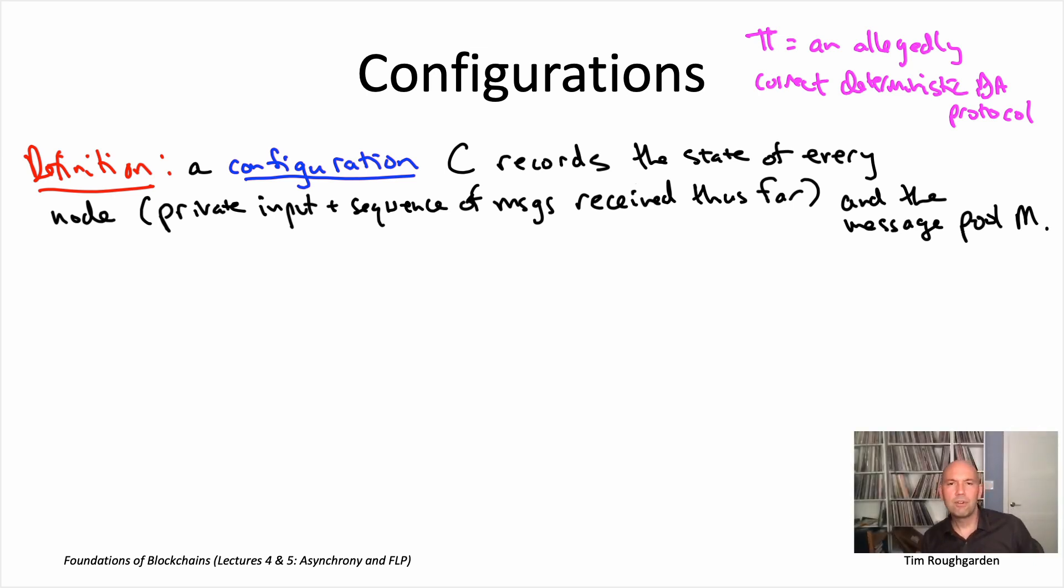So for those of you that have ever come across state machines, deterministic finite automata, that kind of thing, you can definitely think about the execution of a protocol in that way. You can think of it as taking a walk through a really big, possibly infinite directed graph.